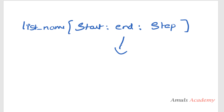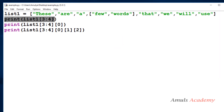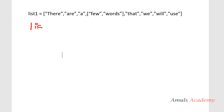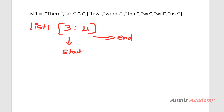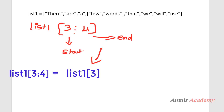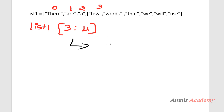In the program, we are first printing the value present from index 3 to 4 — that is list1[3:4]. Here, 3 is the start value and 4 is the end value. Since 4 is exclusive, this operation returns a list with only the value at index 3. In list1, index 0, 1, 2, and 3 are the positions, and at index 3 there is a nested list.